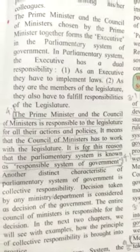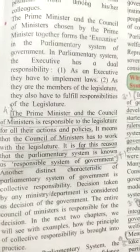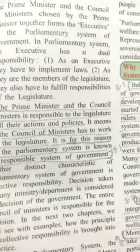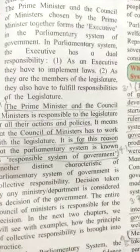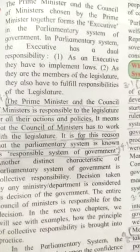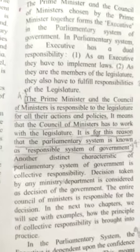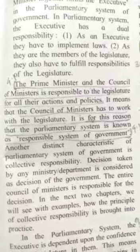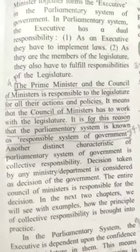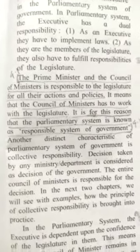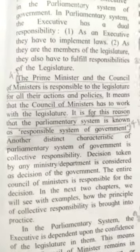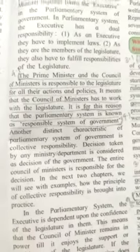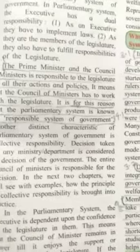In the parliamentary system, the executive has a dual responsibility. They have to implement the laws, and as they are also members of the legislature, they fulfill the responsibilities of the legislature as well. The prime minister and council of ministers are responsible to the legislature. It is for this reason that the parliamentary system is known as a responsible system of government.